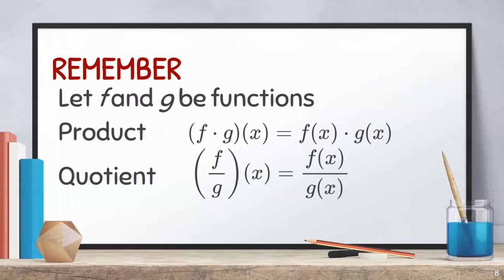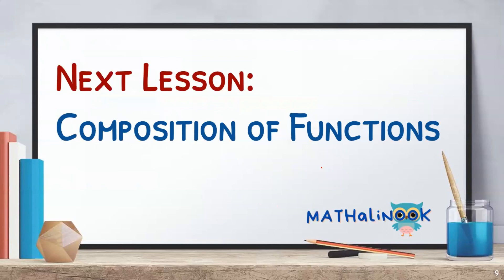As we end this discussion, remember that let f and g be functions. The product of the two functions, denoted by f times g of x, can be solved by multiplying the two given functions f of x times g of x. I hope that you have understood the lesson. In the next video, we will discuss composition of functions. Thank you and see you in the next discussion.